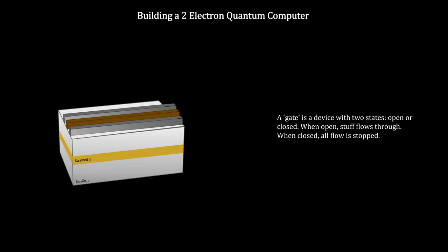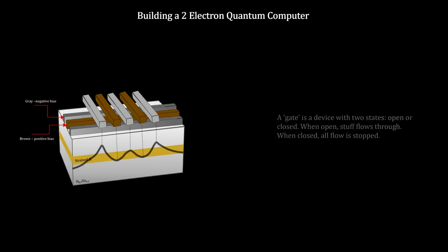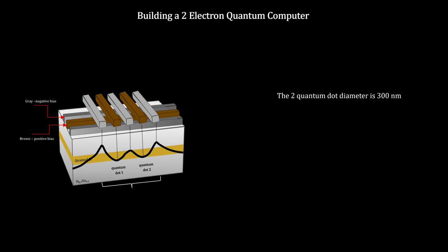On top, we construct an electrically controlled lattice of gates. Negatively biased electrostatic gates in gray and positively biased gates in brown are organized to create two energy wells capable of holding two electrons in place. These two wells are called quantum dots.